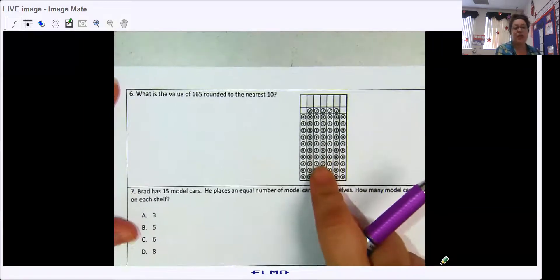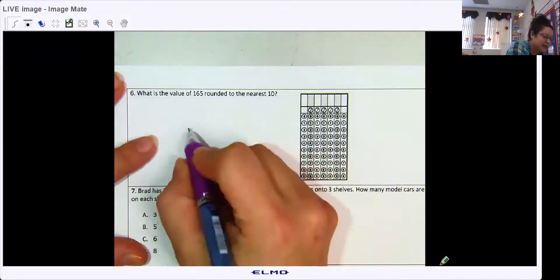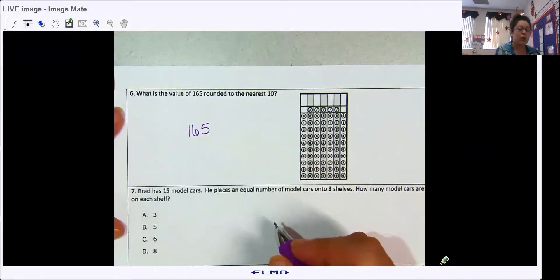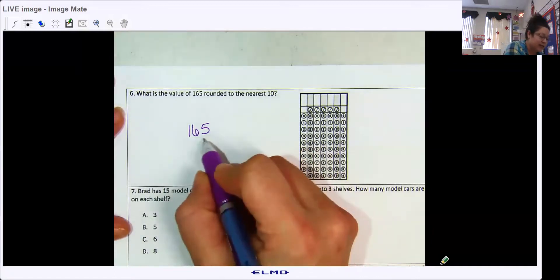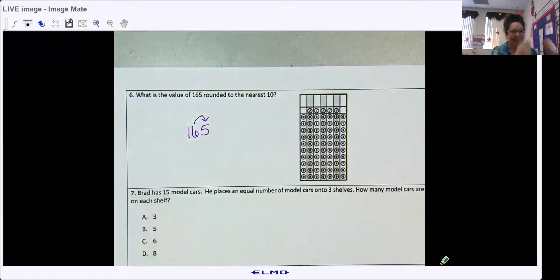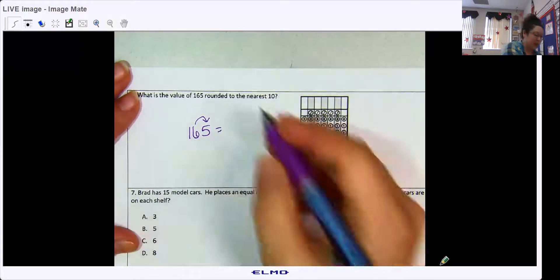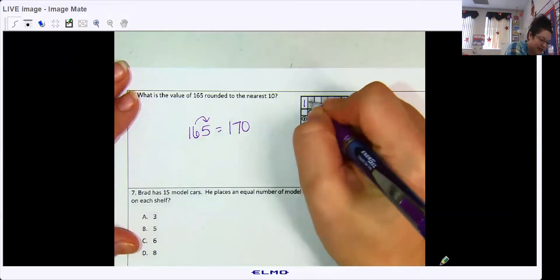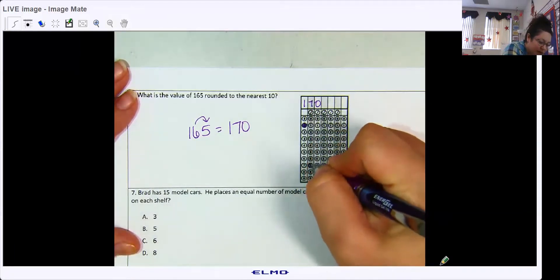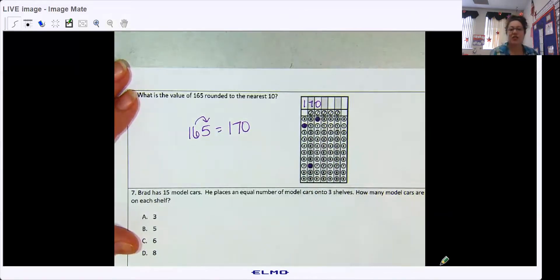We've seen this before and you will see it on the test, so it's good to practice. What is the value of 165 rounded to the nearest 10? So once again, we know if it's rounding to the nearest 10, we look at the ones, and five, six, seven, eight, nine, climb the vine. So I'm going to round that, it's going to go up to 170. So remember, we color in one, we go up to seven, and then we color in zero.